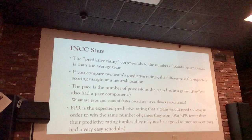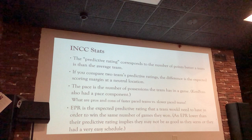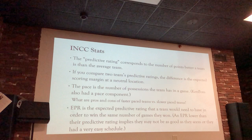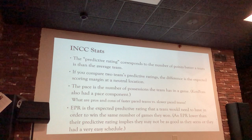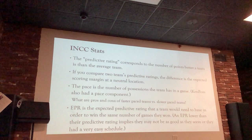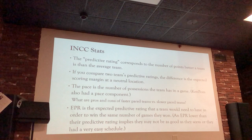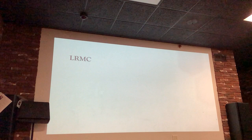The last InkStats column is the EPR — Expected Predicted Rating. This is the rating a team would need to win the same number of games they actually won. If the EPR is lower than their actual predictive rating, they may not be as good as they seem, or they had a very easy schedule. This is often used to help determine seeding.